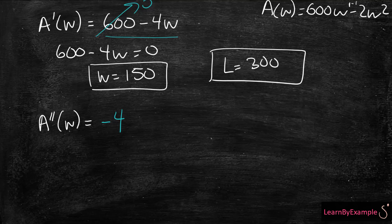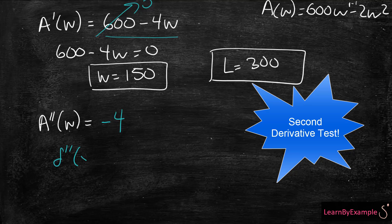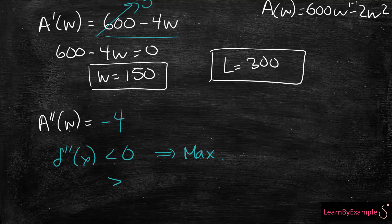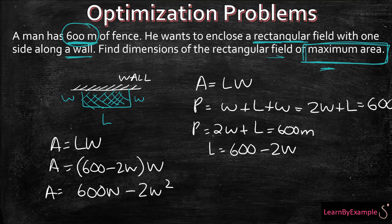And we know that when f''(x) is less than 0, then this represents a maximum. And inversely, if this was greater than 0, then this represents a minimum. So because it's a negative 4, then we know that we received the maximum area.